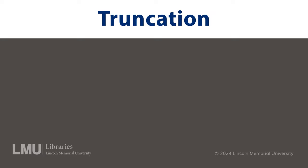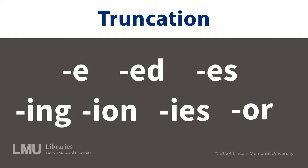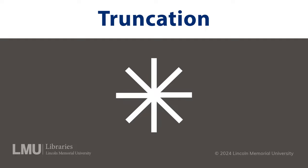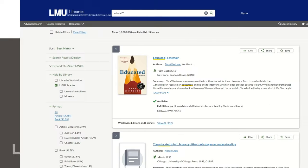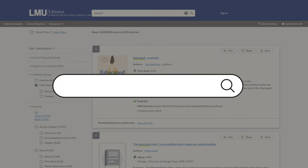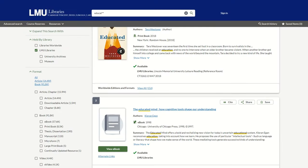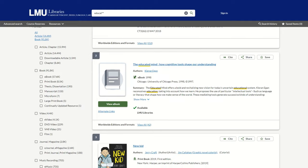Now let's talk truncation. Ever wonder how to search for all variations of a word in one go? Here's the trick: truncation uses an asterisk to find multiple endings of a root word. For example, typing 'educat*' will give you results that include education, educator, and educating, all in one search.